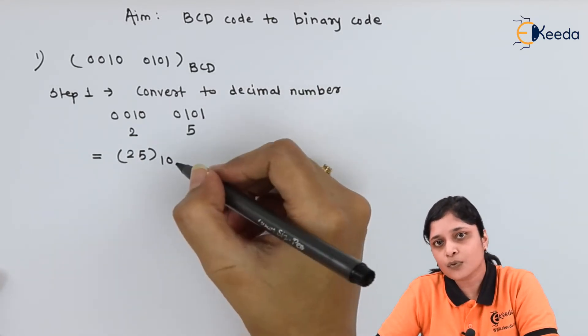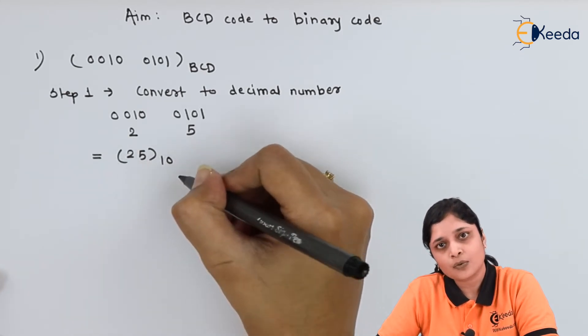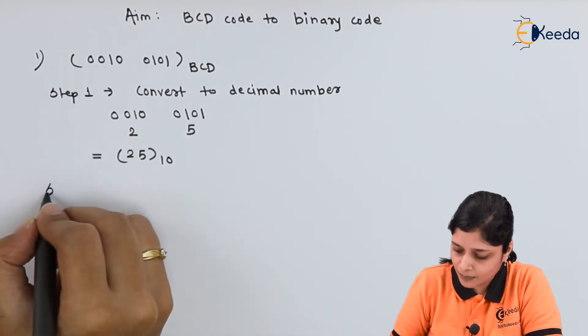Now we will apply the rules for conversion of this 25 to the base 10 to the binary number. Step 2.